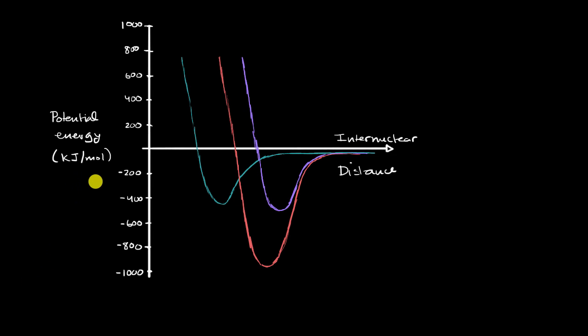In a previous video, we began to think about potential energy as a function of internuclear distance for diatomic molecules. What do I mean by diatomic molecules? Well, we looked at molecular hydrogen, or H2, which is just two hydrogens covalently bonded to each other.